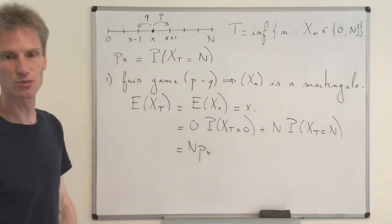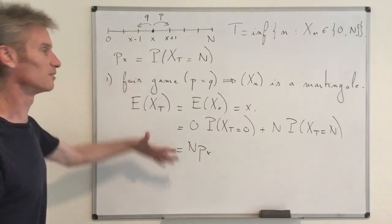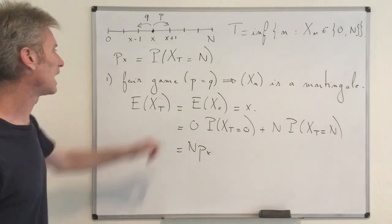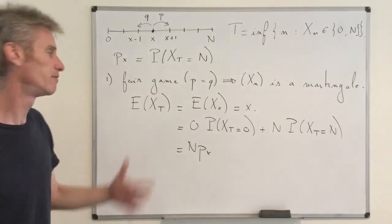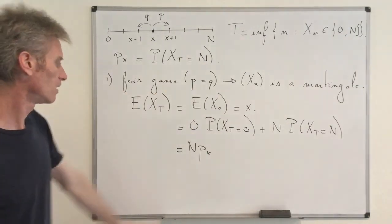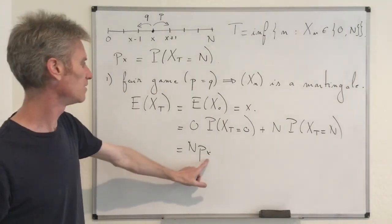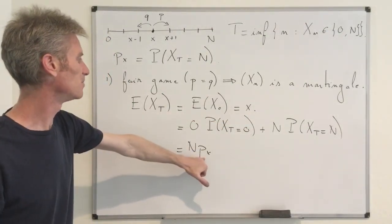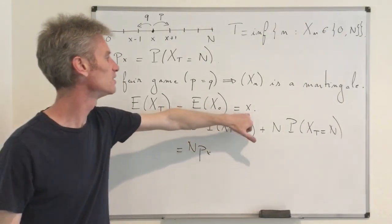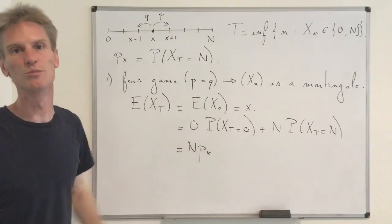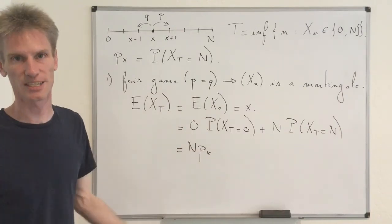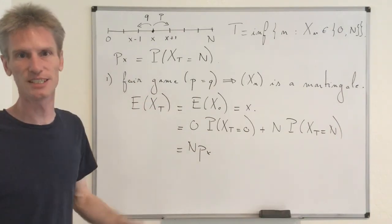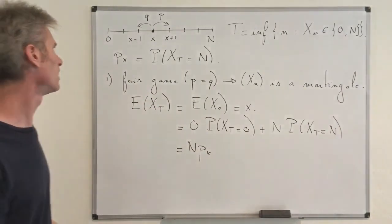That concludes the proof for the fair game case. We get N times P_X equals X, so P_X equals X over N — the same result as from first step analysis, except the proof is very elegant and very short.